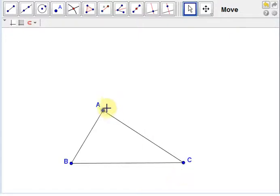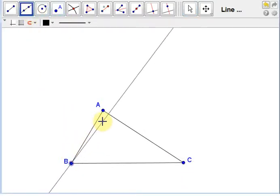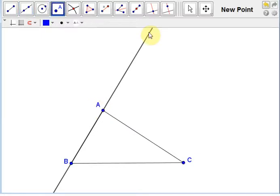In this proof, we'll prove that side AB plus side BC is longer than side AC. To begin this proof, we'll extend the line segment from A to B, and we'll choose a point on this line, D, such that AD has the same length as AC.